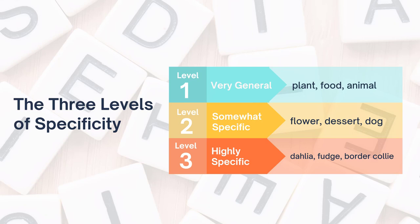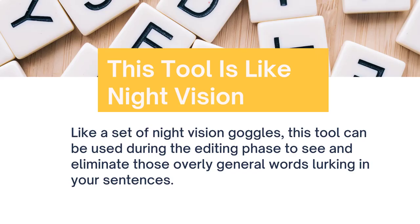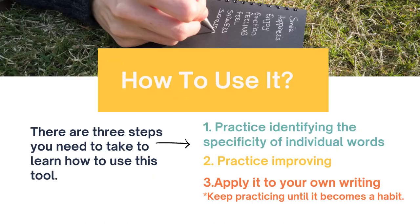This tool is kind of like night vision goggles. Because if you put on a set of night vision goggles, you suddenly become aware of what is out there — you can see things that you couldn't see before. When I work with students in my tutoring sessions, I have them highlight the level one and level two words to get in the habit of seeing something they weren't aware of previously.